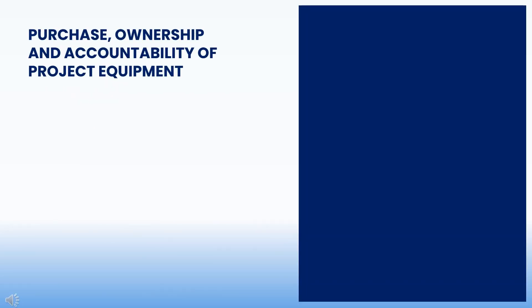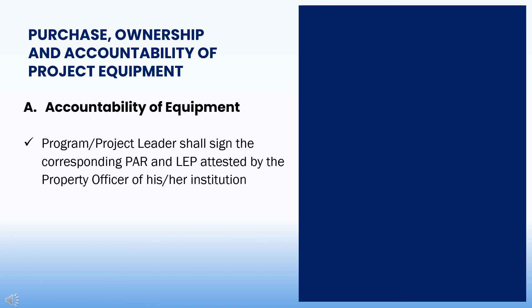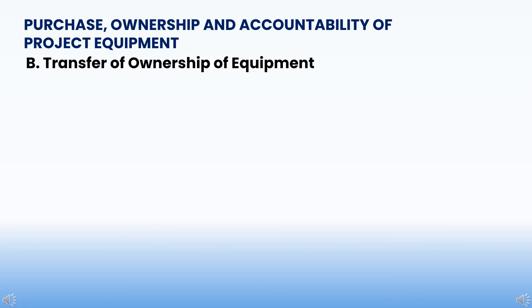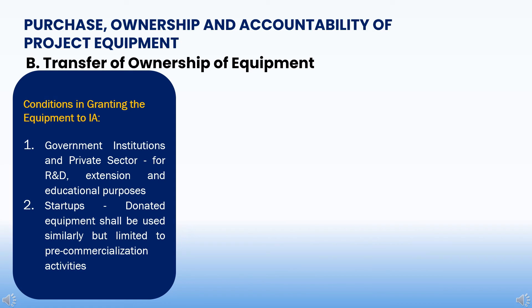Project equipment authorized to be purchased using GIA funds shall be used exclusively for the program or project. The program or project leader shall sign the corresponding PAR and LEP attested by the property officer of their institution, while the funding agency shall issue a PTR and deed of donation to the implementing agency. Government agencies shall record equipment purchased out of project funds in accordance with the Government Accounting Manual, COA Circular No. 2015-002, and other pertinent issuances. For private sectors, startups, NGOs, and POs, all documents related to the purchase of equipment must be submitted to the monitoring agency within 15 days from the date of payment. The funding agency allows the transfer of ownership of equipment without cost to the implementing agency to promote and encourage the conduct of R&D and the establishment of innovative new businesses.